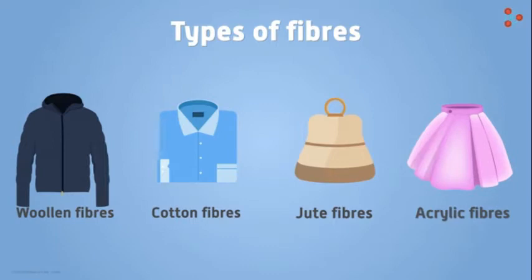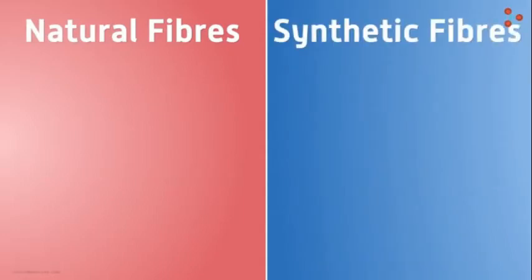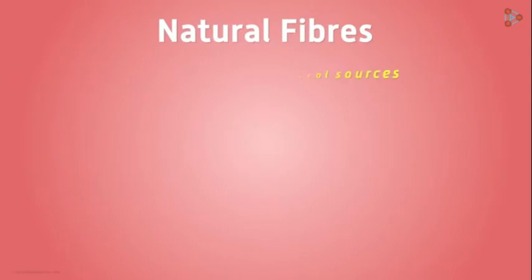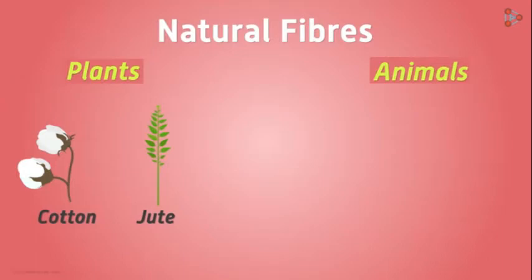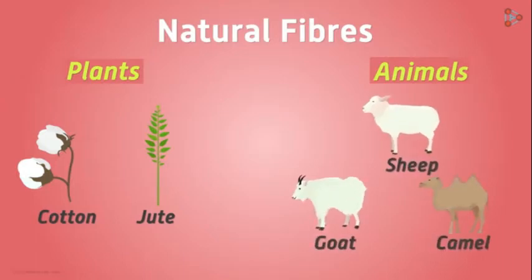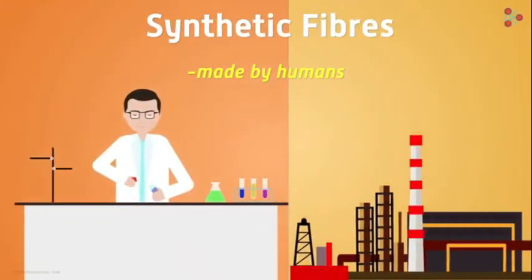For simplicity, we divide fibers into two major categories: natural fibers and synthetic fibers. Natural fibers are obtained from natural sources. The sources would be both plants and animals. Examples include plants like cotton and jute, and animals like sheep, goat, and camel, which are used for their fur and fleece. In contrast, synthetic fibers are made by us in laboratories or industries, like nylon, polyester, and acrylic.